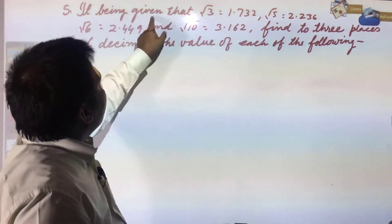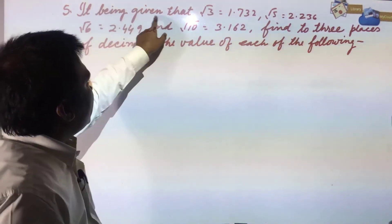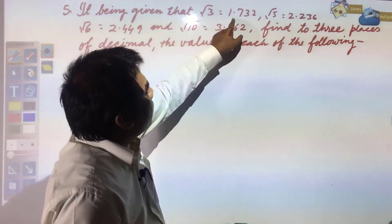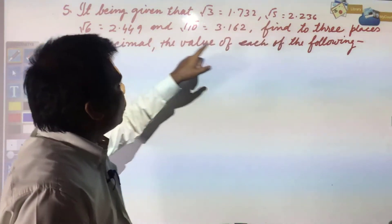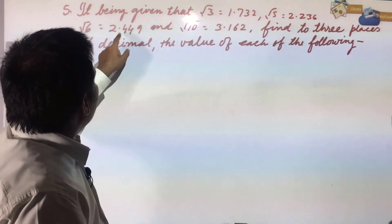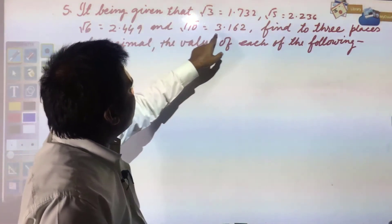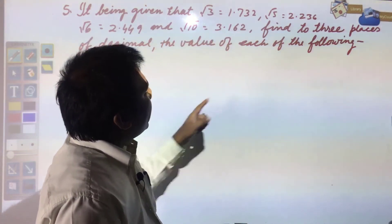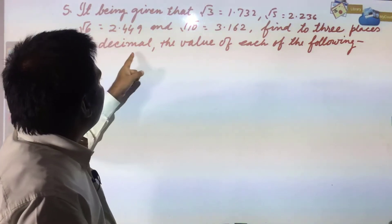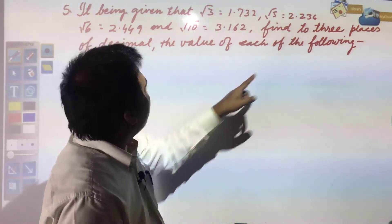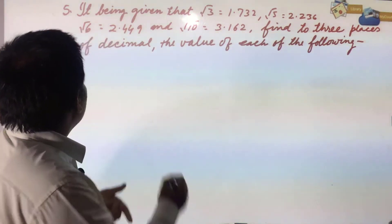Next: given that √3 = 1.732, √5 = 2.236, √6 = 2.449, and √10 = 3.162, find to 3 places of decimal the value of each of the following. One question is given.